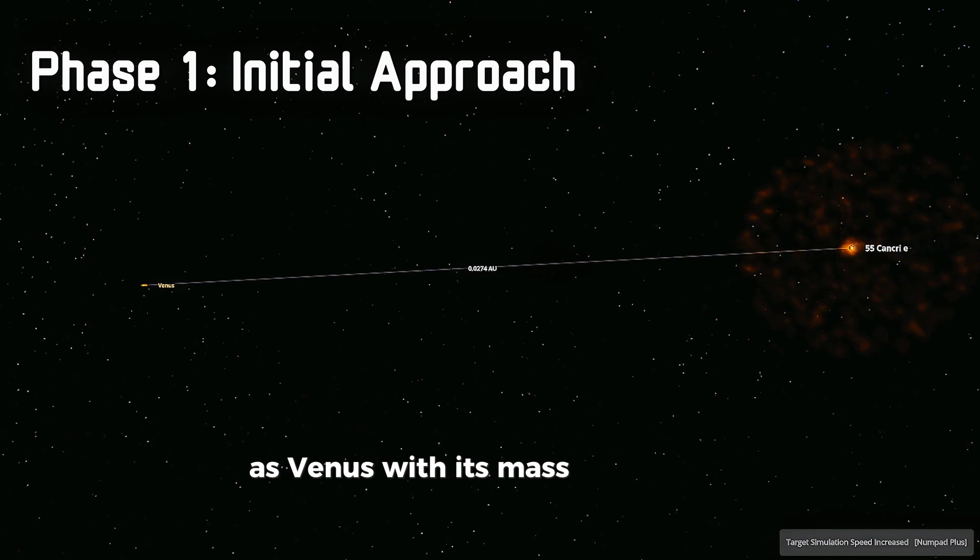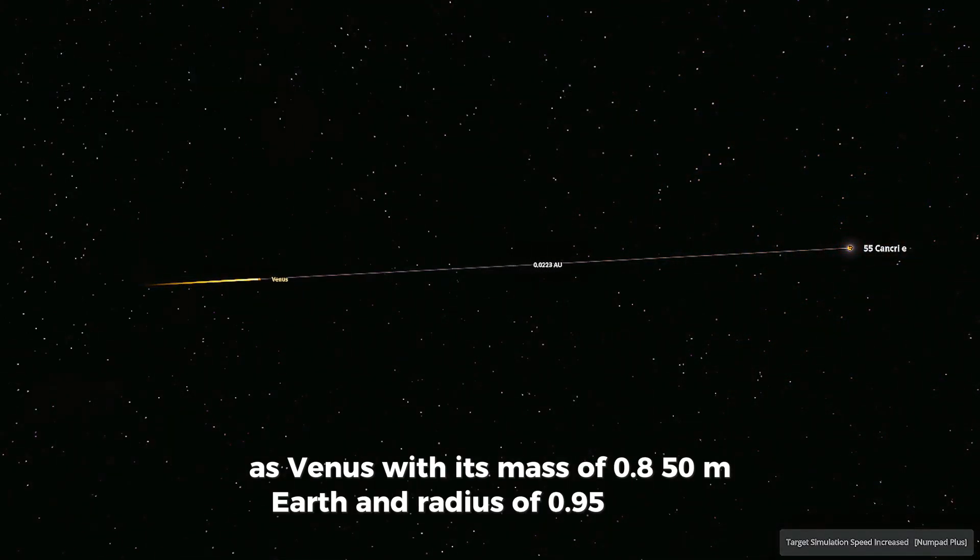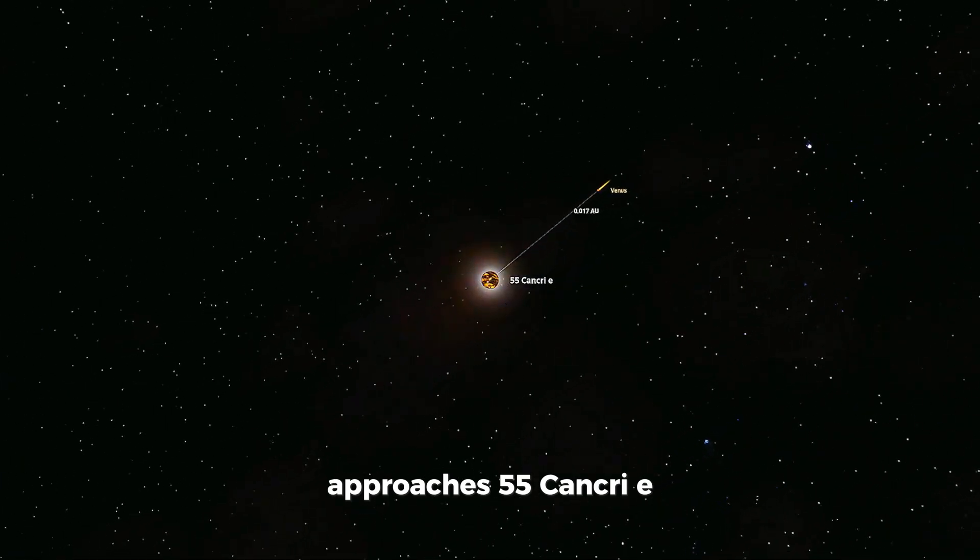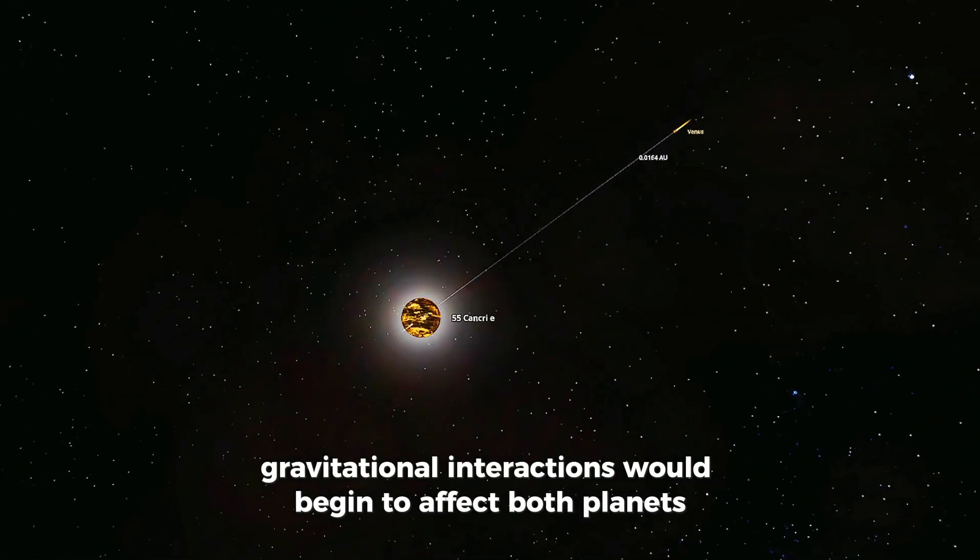Venus, with its mass of 0.850 Earth masses and radius of 0.95 Earth radii, approaches 55 Cancri e. Gravitational interactions would begin to affect both planets.